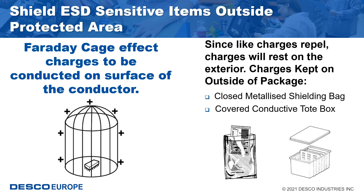An impressive demonstration of the Faraday cage effect is that of an aircraft being struck by lightning. This happens frequently but does not harm the plane or the passengers. The metal body of the aircraft protects the interior, and for the same reason a car may be a safe place to be in a thunderstorm.